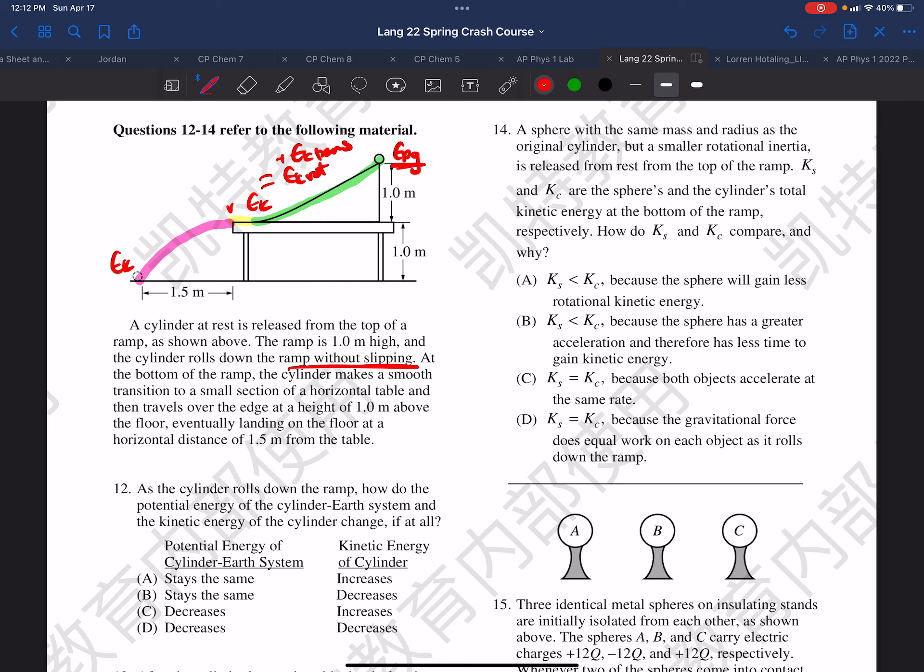And then again, we have additional kinetic energy being converted from the gravitational potential energy from this location to that location.